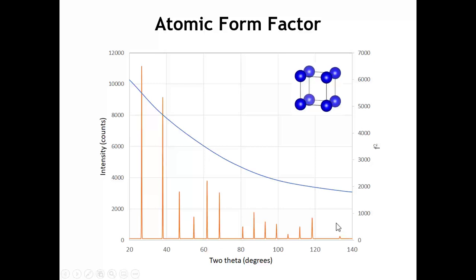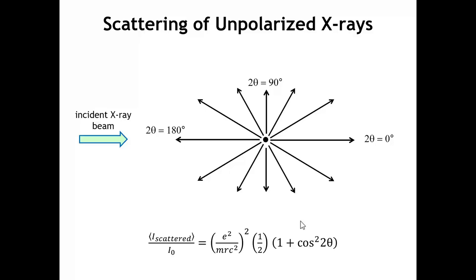However, the form factor drop-off does not explain some of the ups and downs we see along the way. Going back to elastic scattering of X-rays by electrons and atoms, recall that an electron does not scatter X-rays equally in all directions. Depending on the polarization of the incoming beam — which electric field directions are allowed — there is an angular dependence. For an unpolarized X-ray beam, as you would have in most laboratory X-ray sources, you get a one plus cosine squared two-theta dependence.